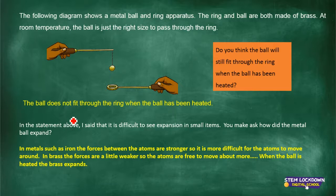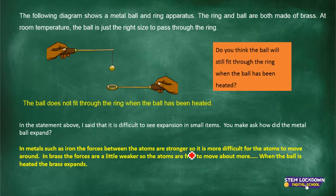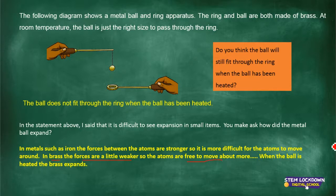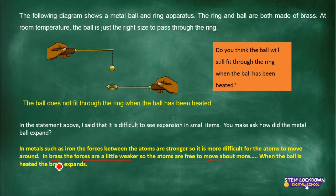In metals such as iron, the forces between the atoms are stronger, making it more difficult for the atoms to move around. In brass, however, the forces between the atoms are a little weaker — and because they're weaker, they're freer to move about. This is why the brass ball expands when heated. The atoms in metals are more difficult to move around, but in brass the forces between atoms are weaker.